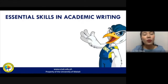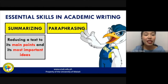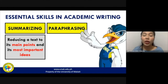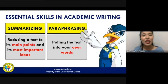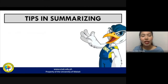When we engage in academic writing, we develop certain essential skills that help us compose academic texts better. These skills are summarizing and paraphrasing. Summarizing is a skill wherein we reduce a text to its main points and most important ideas — we try to keep things short and brief for our readers. Paraphrasing is a skill wherein we put the text into our own words; the idea is still there, but we change the words we use to relay those ideas.